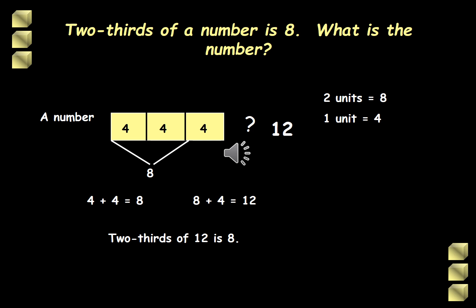Hence we can find out that each unit is equal to 4. With this we can also get the answer by just adding all the 3 units. So that's 4 plus 4 plus 4 that gives us 12. To check, two-thirds of 12 is 8.